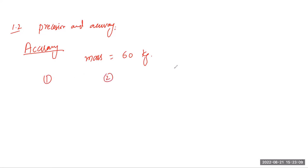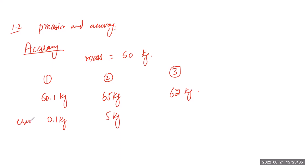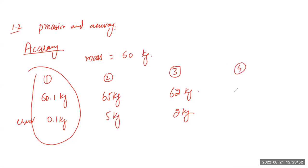We have 3 machines. The first gives 60.1 kg, the second gives 65 kg, and the third gives 62 kg. We measure the error in each case. The first has an error of only 0.1 kg, the second has an error of 5 kg, and the third has an error of 2 kg. So the first machine gives the most accurate measurement because it has the least error. If a machine gives exactly 60 kg, it is the most accurate instrument. The less the error, the more the accuracy.